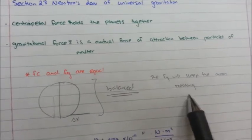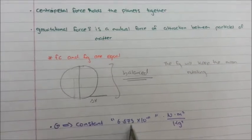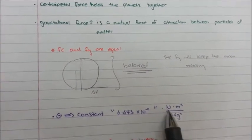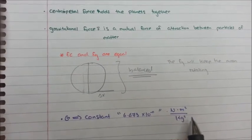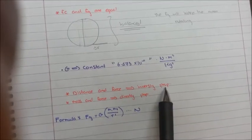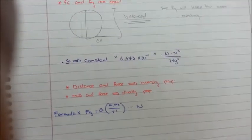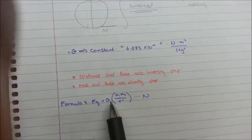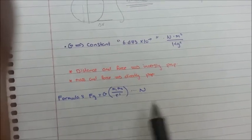That is why the moon is balanced — Fg will keep the moon rotating. The big G is a constant, always 6.673 times 10 to the power of negative 11, with units of N·m² per kg². Distance and force are inversely proportional; however, mass and force are directly proportional. The formula we use is Fg equals G times M1 times M2 over R squared, and the unit is Newton.